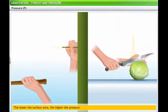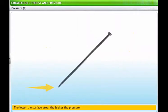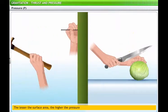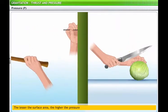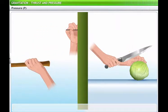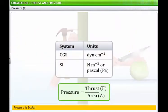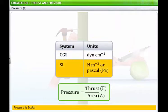The lesser the surface area of an object, the more the pressure applied by that object. The pointed tip of the nail minimizes the surface area on which thrust is applied. Therefore, while driving the nail into the wall, the pressure of the hammer is maximized, which helps drive the nail into the wall. Pressure is scalar and is measured in dyne per centimeter square in the CGS system, or newton per meter square (pascal, Pa) in the SI system.